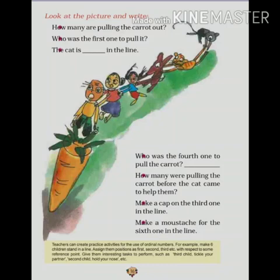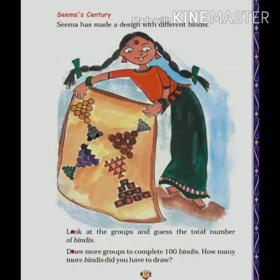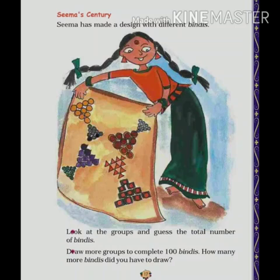Make a mustache for the sixth one on the line — mustache means a mooch, you have to make it. And one more interesting activity: you can see the number of bindis. The girl is having different kinds of bindis and you arrange them in different patterns. You can take old bindis from your mother and arrange them making different kinds of patterns on a piece of white paper or some cloth and arrange beautifully. This is your homework. Thank you.